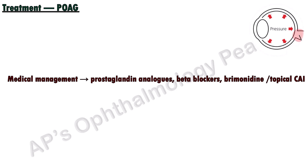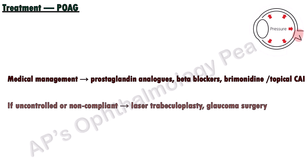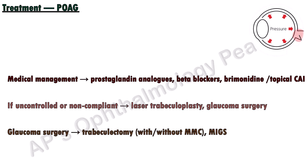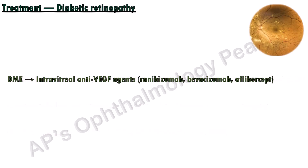Treatment in primary open-angle glaucoma always starts with medical management. Prostaglandin analogues are the drugs of first choice; others such as beta blockers, brimonidine, or topical carbonic anhydrase inhibitors may be added singly or in combination. If the intraocular pressure is uncontrolled or the patient is non-compliant with topical medication, either laser trabeculoplasty or glaucoma surgery in the form of trabeculectomy with or without mitomycin C may be performed. Alternatively, one of the newer minimally invasive glaucoma surgeries may be performed.